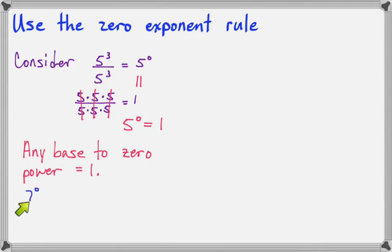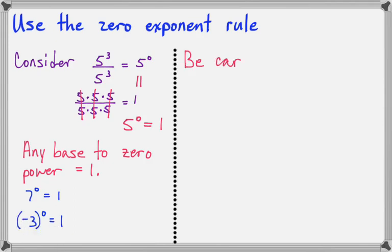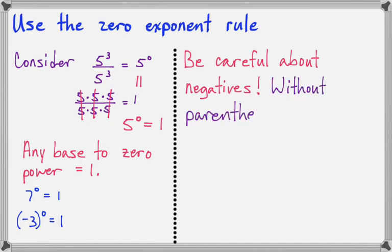Here are a couple of examples. 7 to the 0 equals 1, and negative 3 to the 0 equals 1, because the base here is negative 3, and anything to the 0 is 1. Now you do have to be careful about negatives, because without parentheses, the negative is not part of the base.